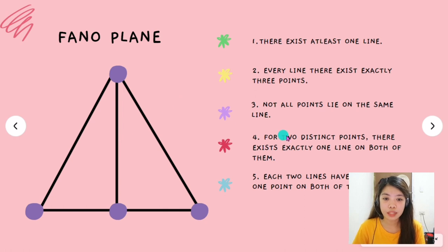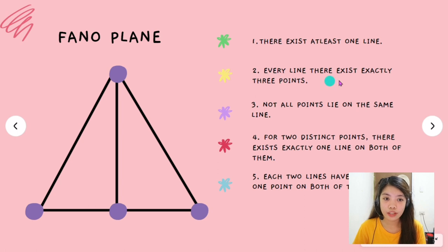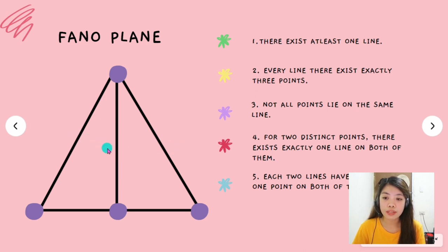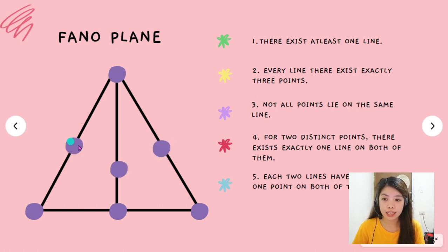Before we proceed to the 4th axiom, let me go back. Every line has exactly 3 points. So, because we created 3 lines here, let us put points on them so that there will be exactly 3 points in each line. So it will look like this.